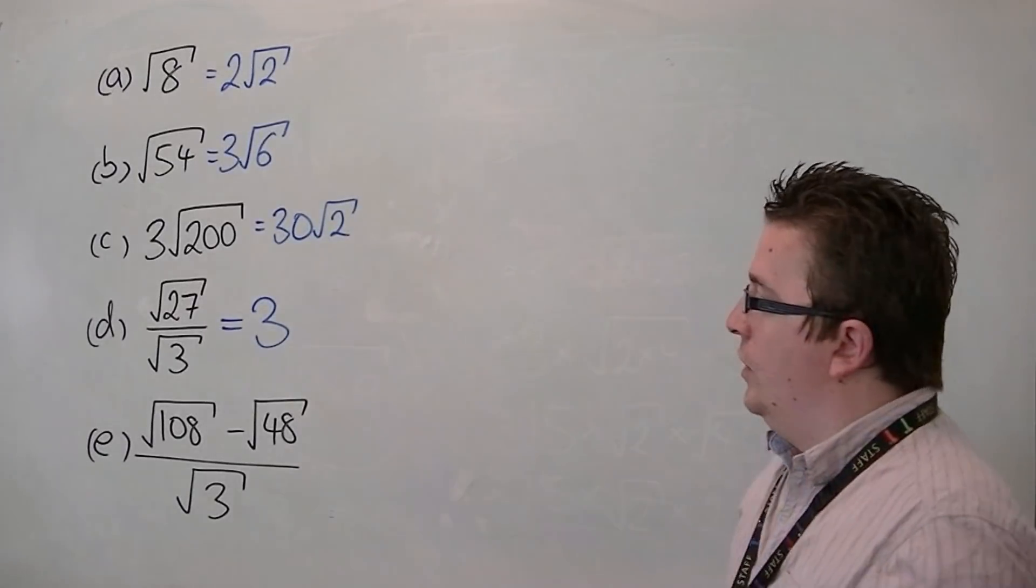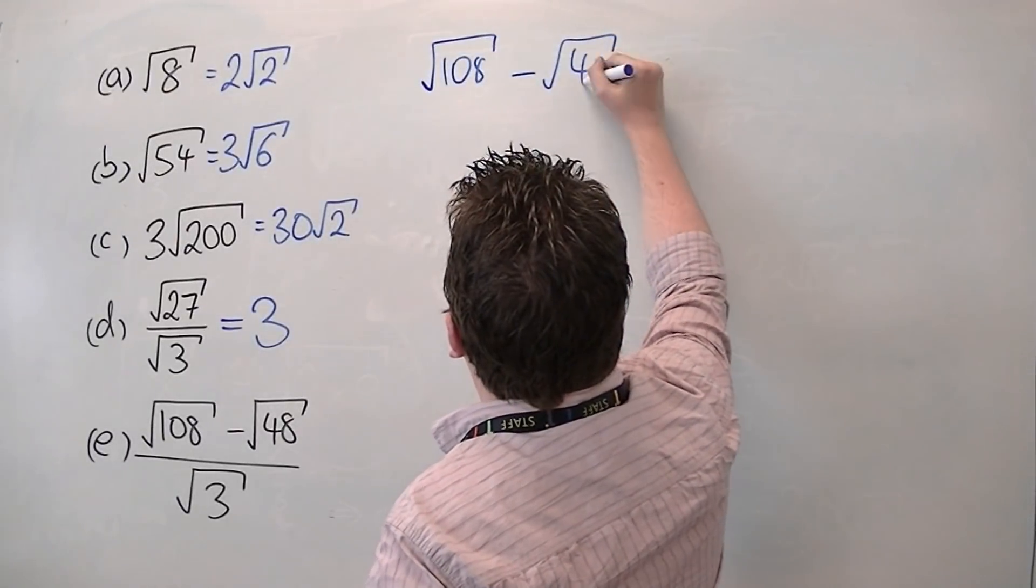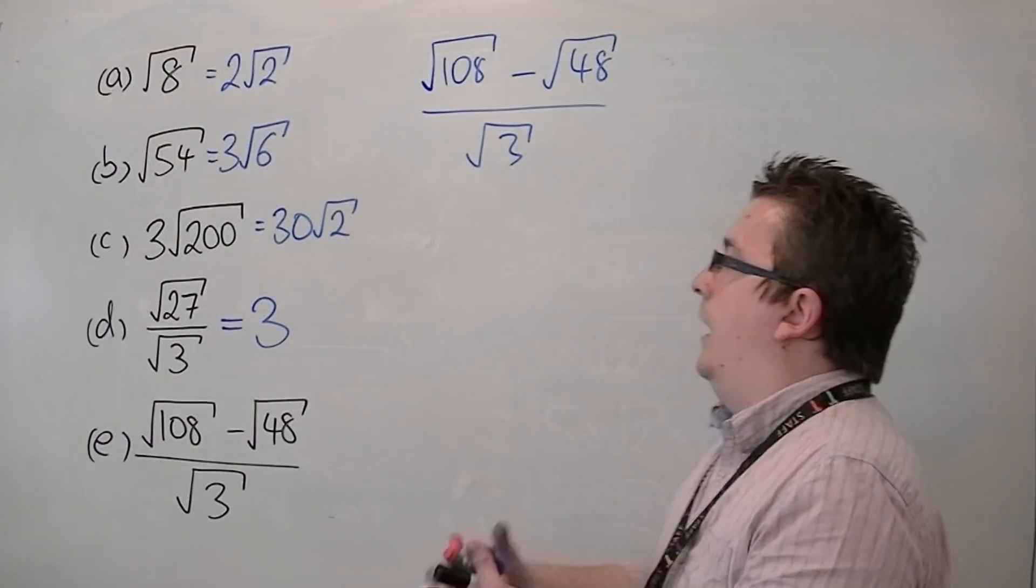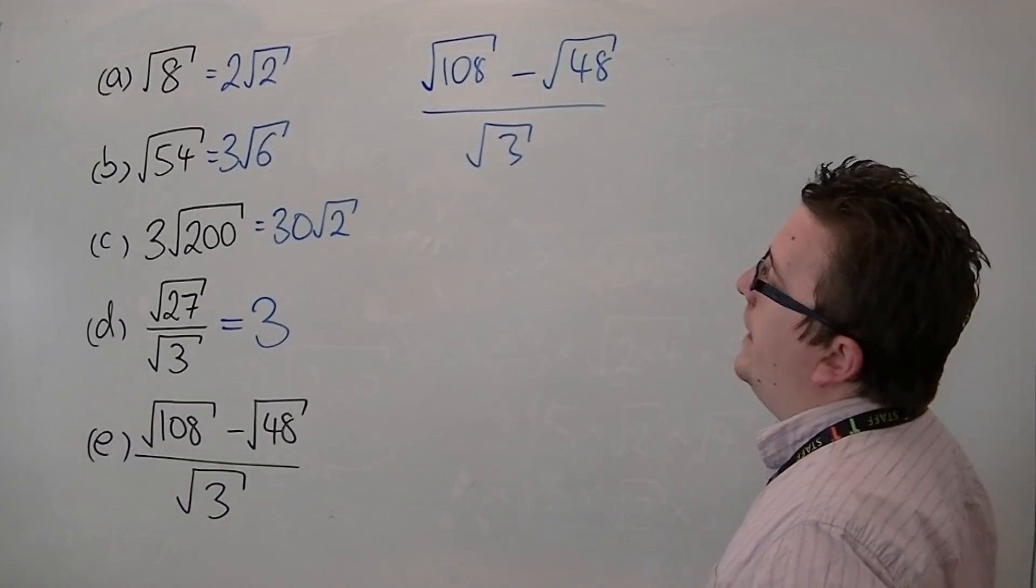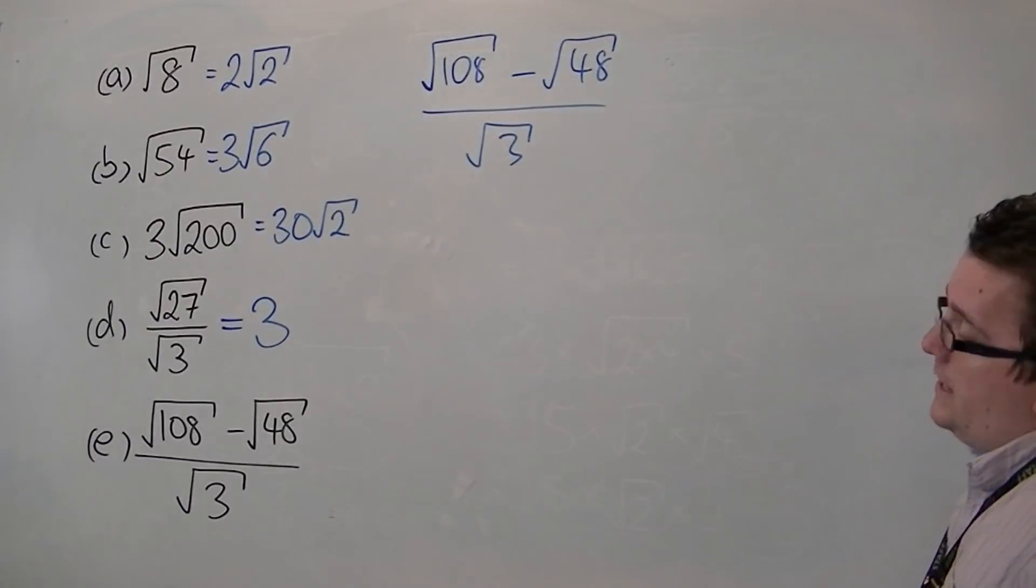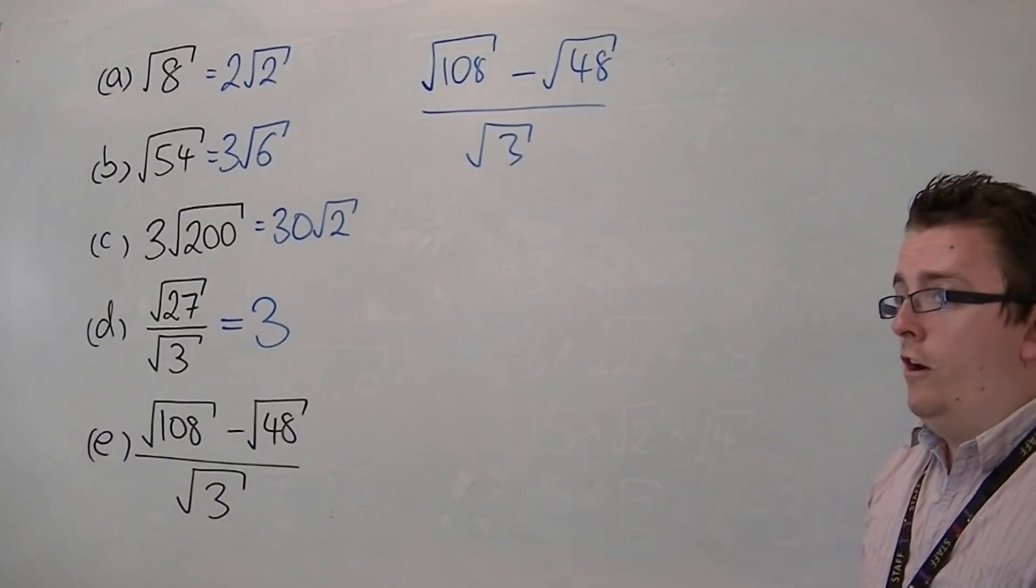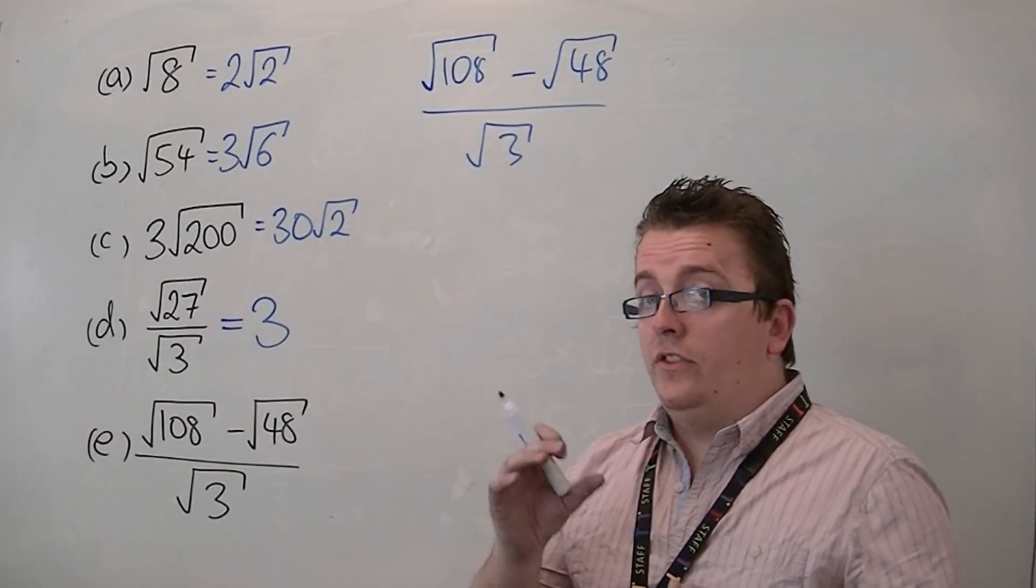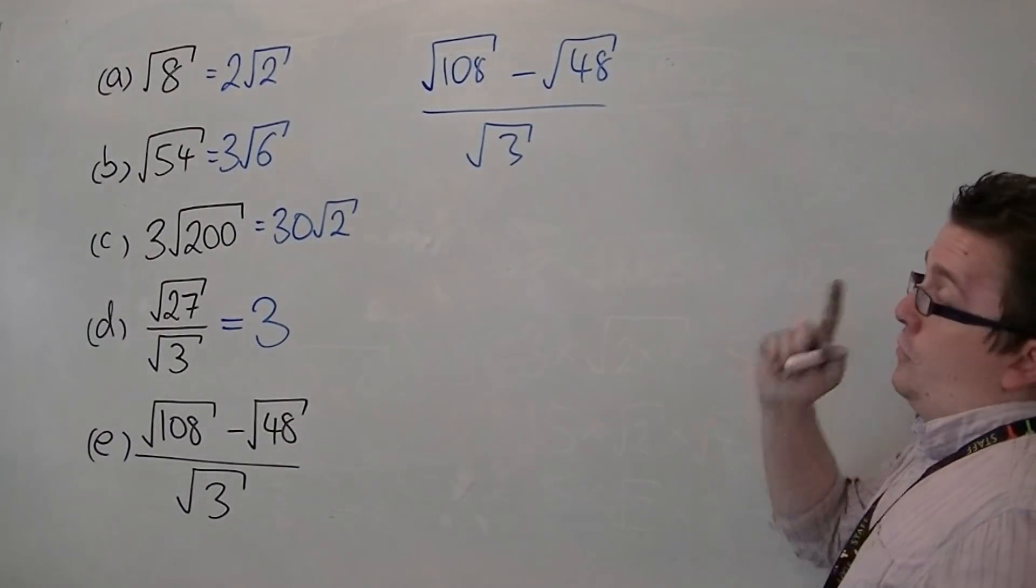So in this last question, we have root 108 take away root 48 divided by root 3. So we're going to need to simplify each element in order to get to our overall simplified version. Now, 108, I'm going to be spotting that 9 goes into 108. But if you think about it, is there a larger one? And the answer is yes. The larger one is actually 36 goes into 108 three times.